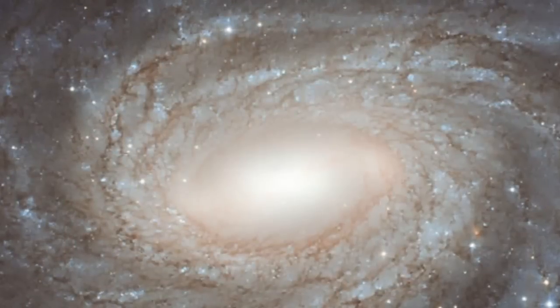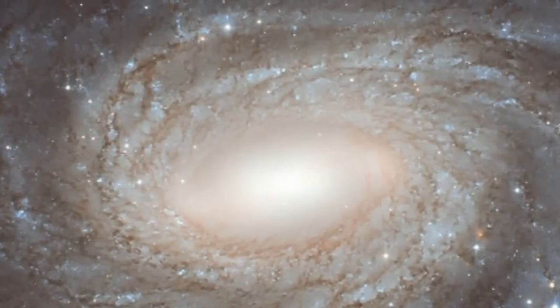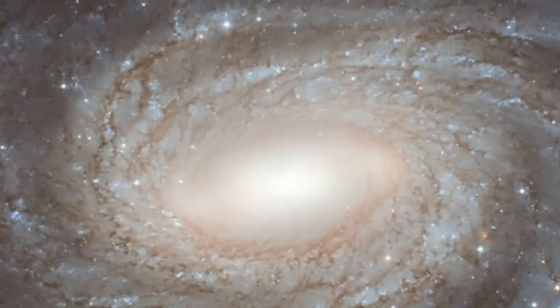And so people started worrying about this in the 1960s and realized that there was a possible solution which is that maybe the thing you're looking at isn't a sort of a fixed spiral pattern but is actually a wave. Just like a sound wave in the air for example, it's a wave of density that's traveling around the galaxy. And the nice thing about waves is that they don't have to travel at the same speed as the medium that they're in.